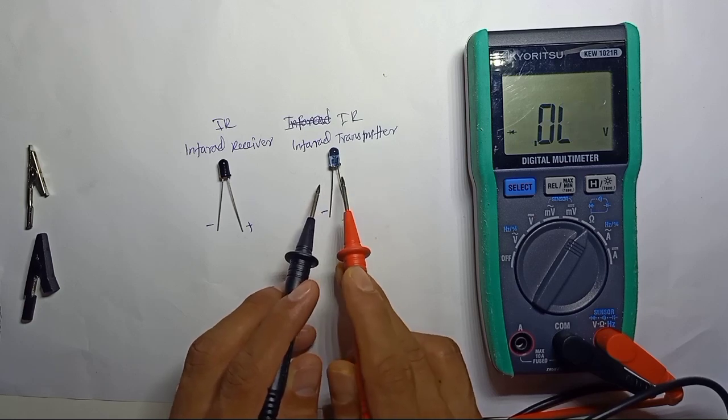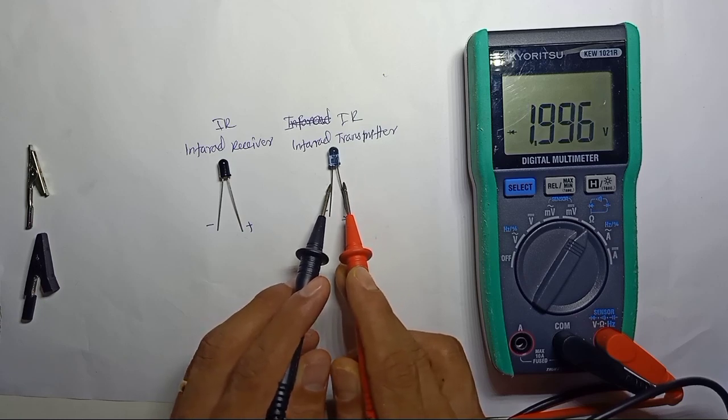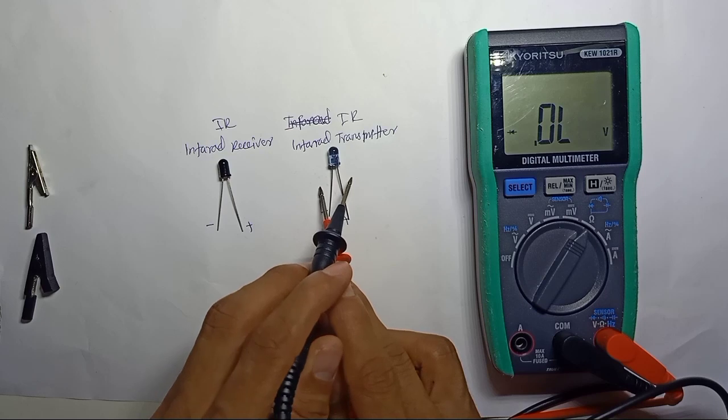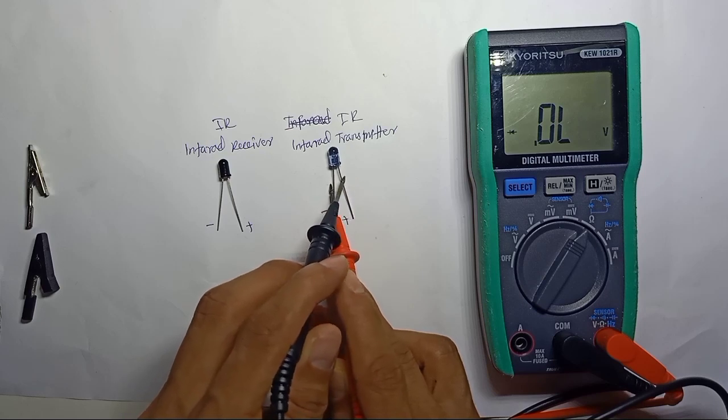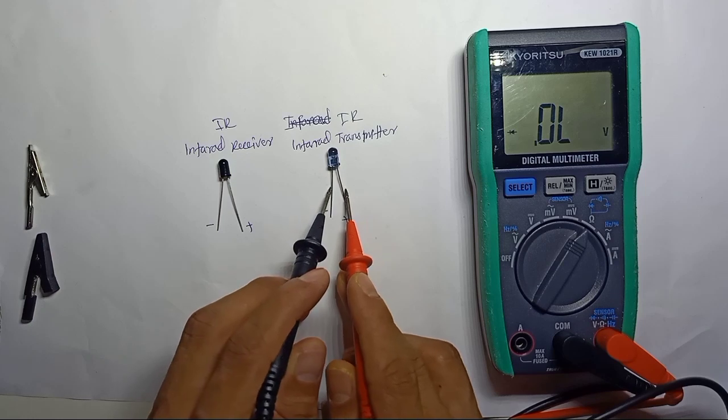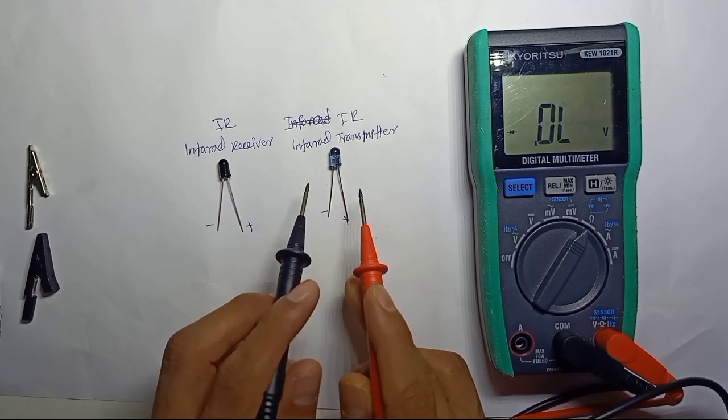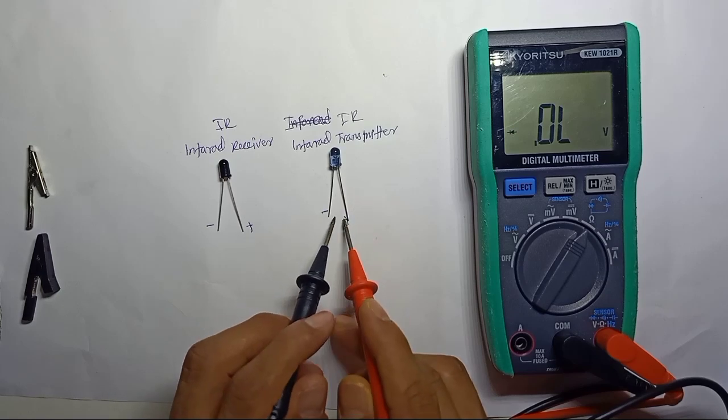If you reverse, there's no voltage drop - just like a diode. If you reverse, this is reverse blocking. Forward voltage shows diode voltage drop, so this is in good condition - the infrared transmitter is good.